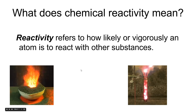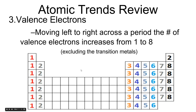Starting over in group one, I have one valence electron, then two, three, four, five, six, seven, eight — and it repeats. Note that this excludes the transition metals. None of the transition metals follow that periodic trend.